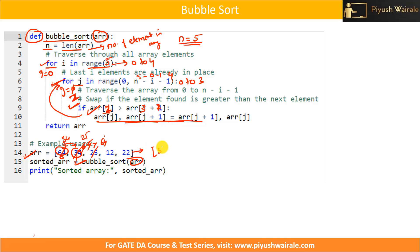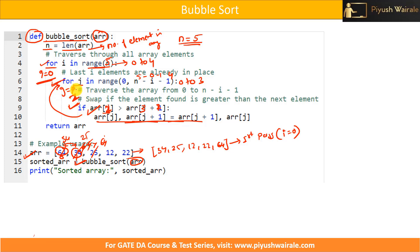After all inner iterations of the first pass (i equals 0), we get the list: 34, 25, 12, 22, 64. The largest element 64 is now at the last position. Then the outer loop increments to i equals 1, and j iterates in range 0 to n minus i minus 1, which is 5 minus 1 minus 1 equals 3.